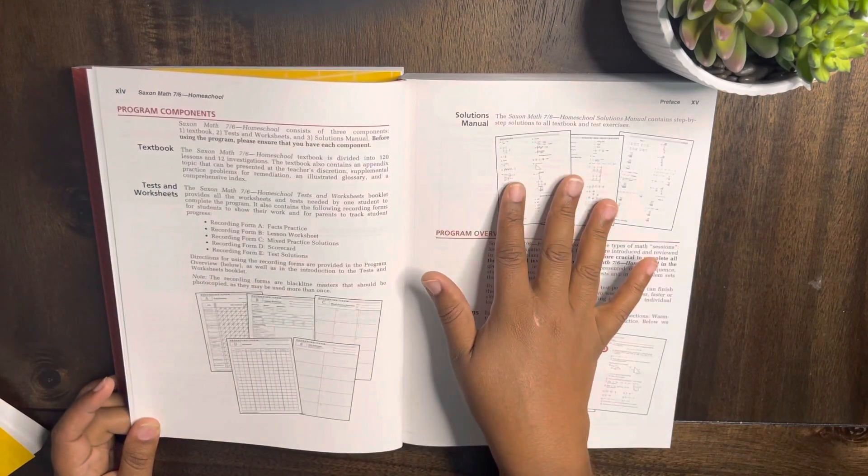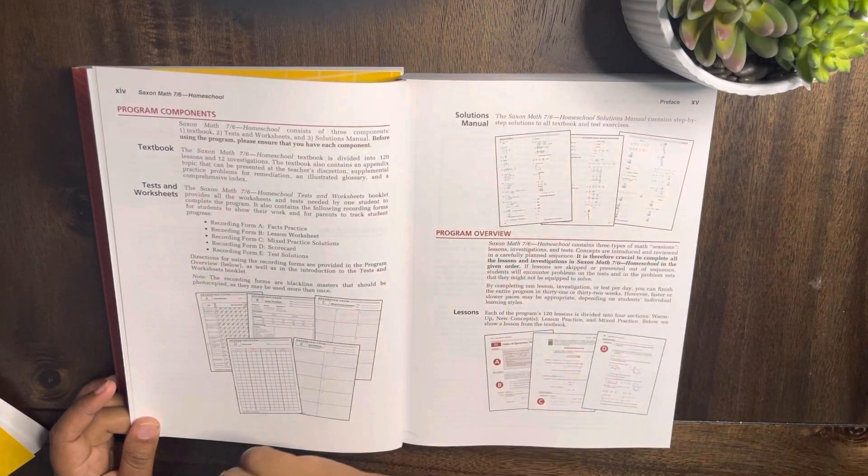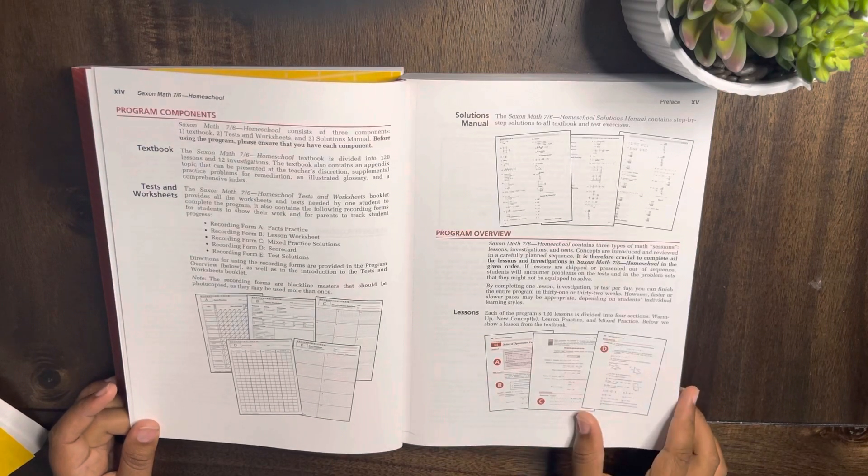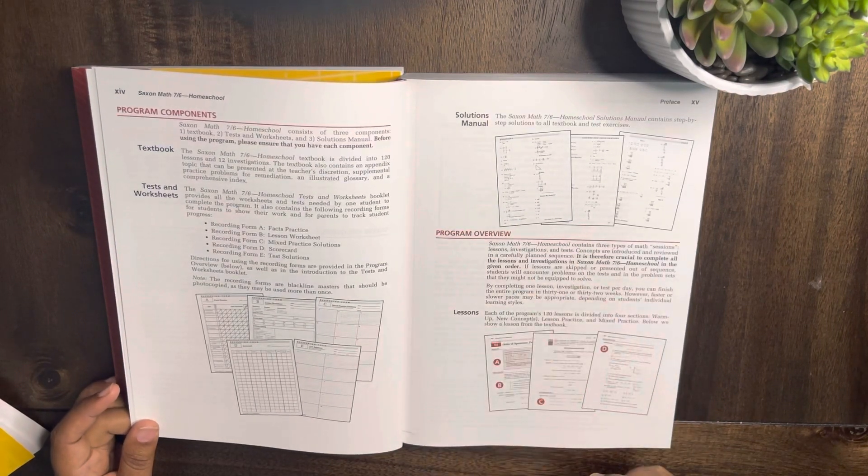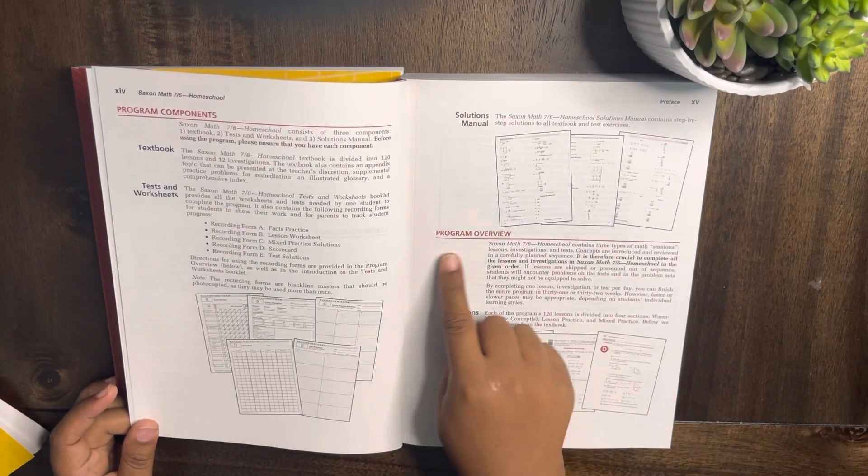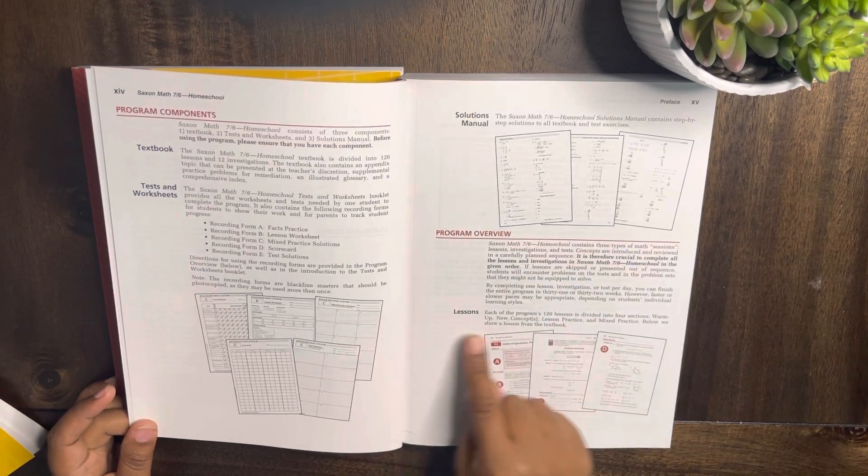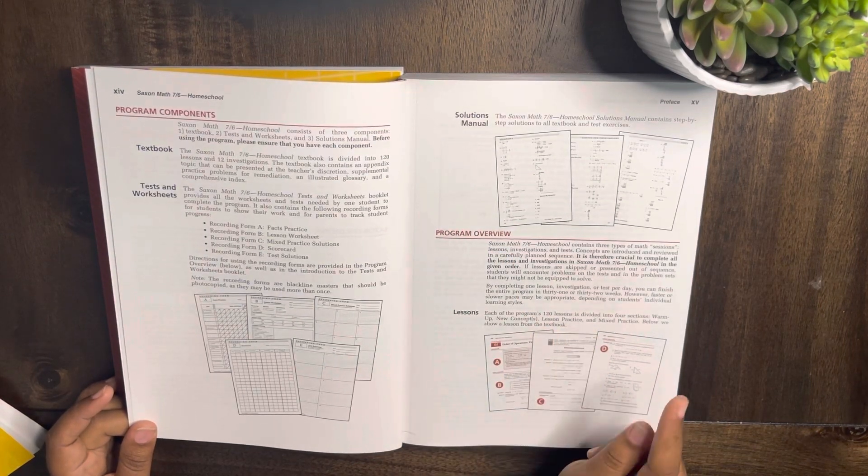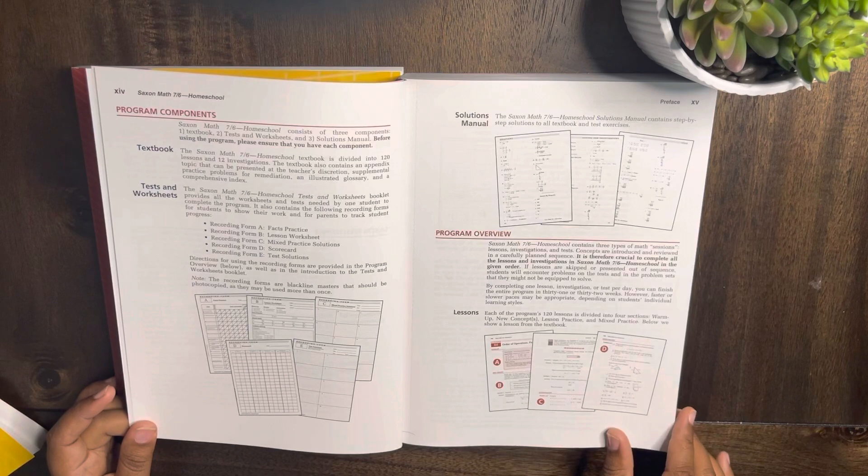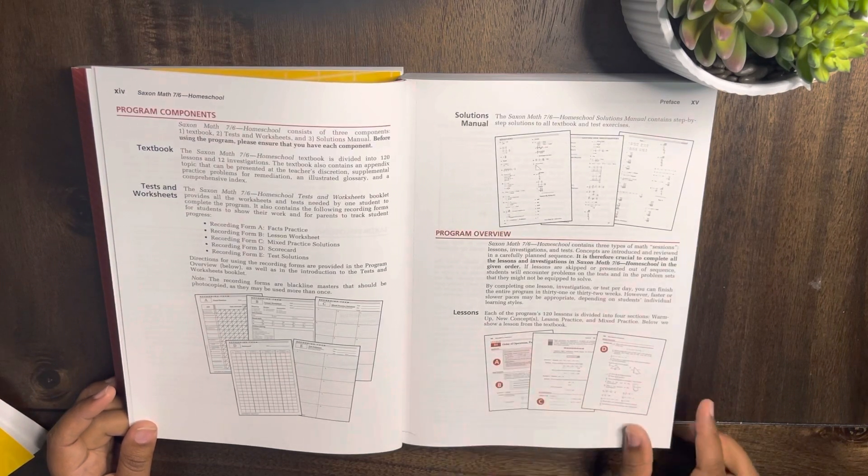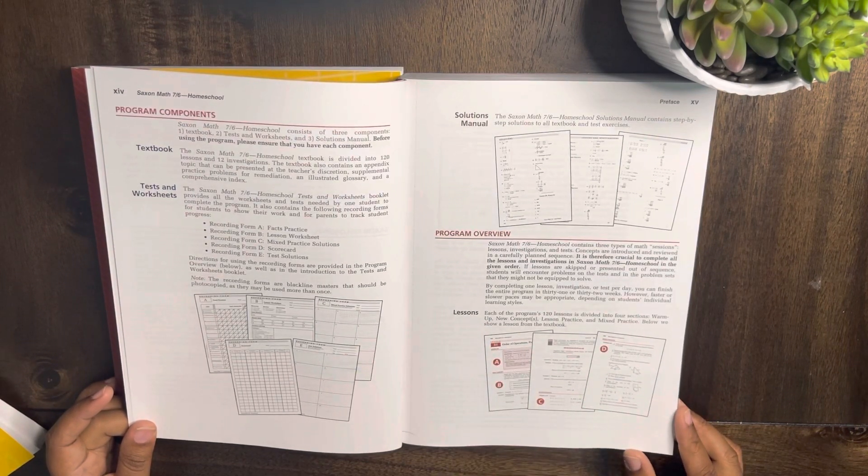Then it goes on to the program's components. As I already told you, it comes with tests and worksheets book, a solution manual book, and the textbook. So let's talk about what the lessons look like. Program overview: 120 lessons divided into four sections - warmup, new concepts, lesson practice, and mixed practice.